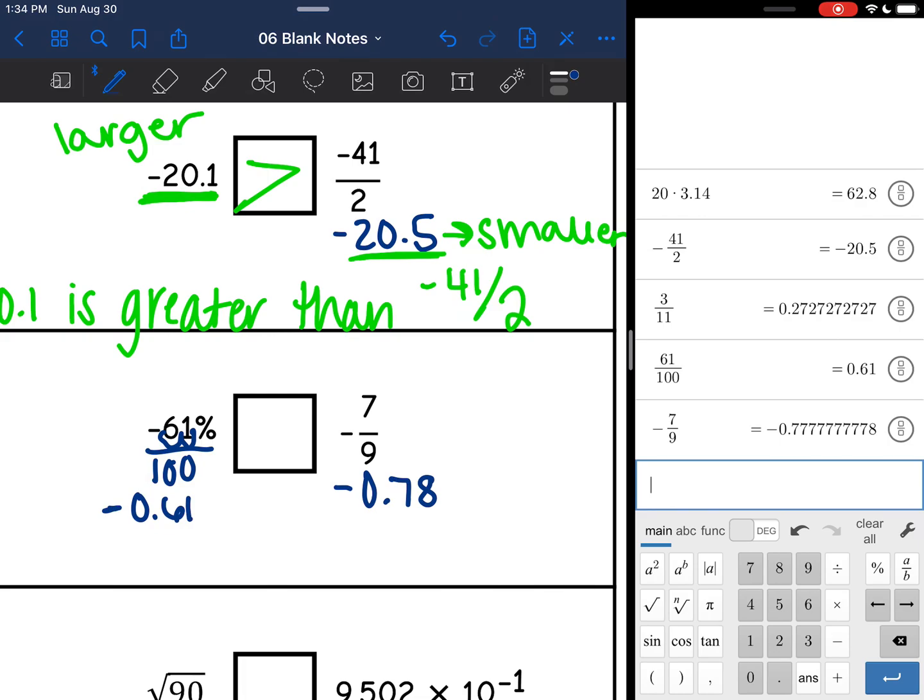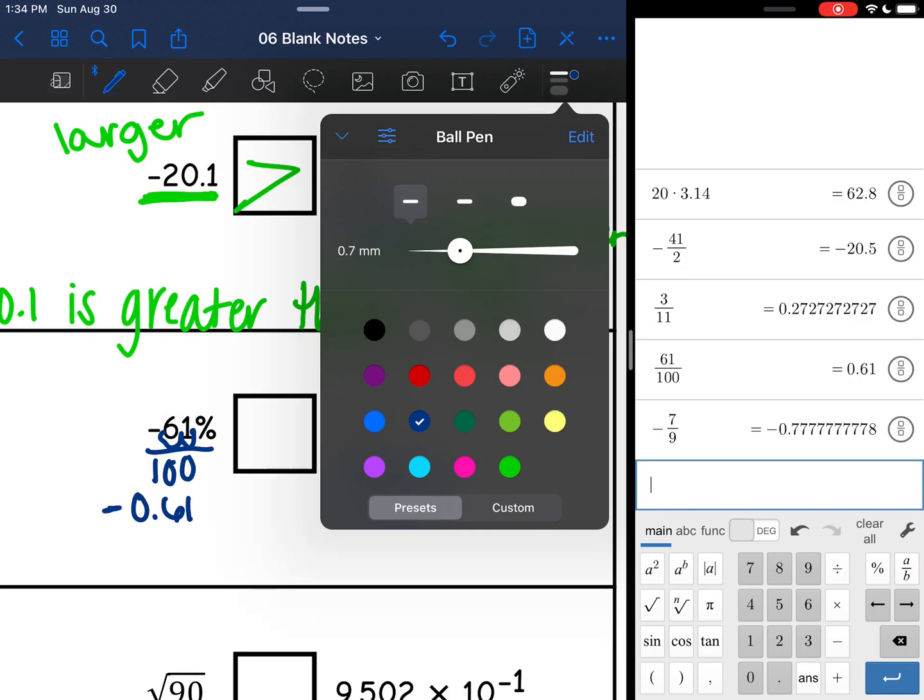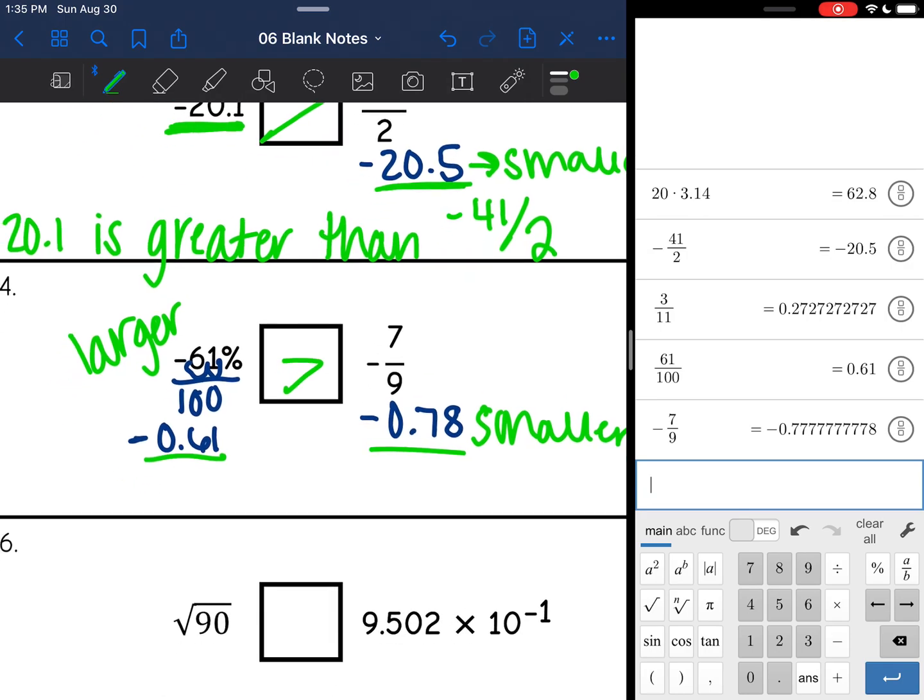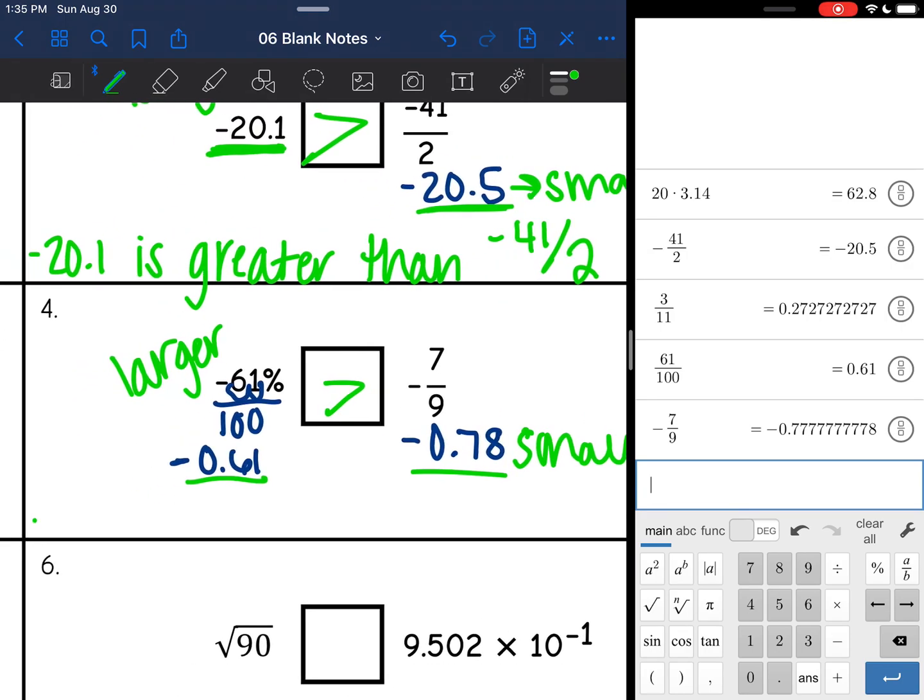And I forgot to put the negative sign here. So it's kind of like the one above it. Think about which one is going to be larger and which one is going to be smaller. This one is closer to 0. It is less negative. So that is the larger number. And then this one is more negative. So that is the smaller number. So my greater than symbol will go there. So we would say negative 61% is greater than negative 7 ninths.